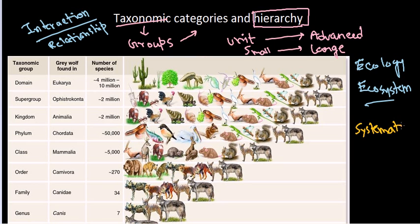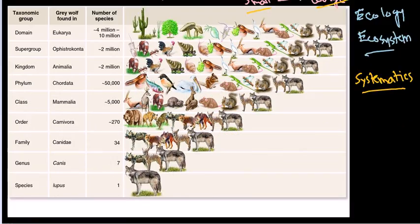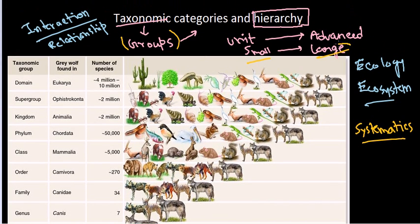Systematics deals with the relationship of all those organisms that are arranged in taxon. Now, there are different groups in taxonomy; the groups contain certain common features or common characteristics, so organisms having those characteristics will be put inside those groups. The group hierarchy will be organized from the smallest foundation to the largest foundation. Let's start from the largest foundation, then come down to the smallest one.